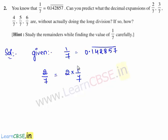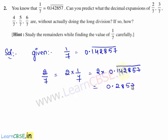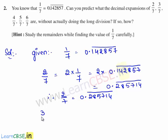That is, we need to multiply the decimal expansion of 1 by 7 with 2, which is 2 times 0.142857 bar. So, 2 times 0.142857 bar gives 0.285714 bar. Hence, the decimal expansion of 2 by 7 is equal to 0.285714 bar.